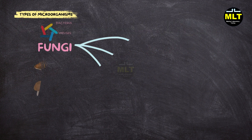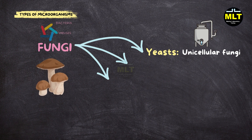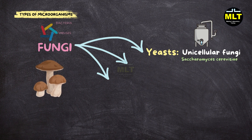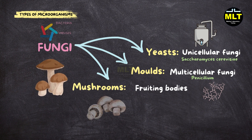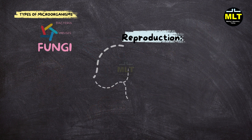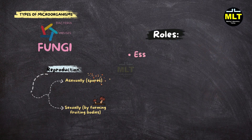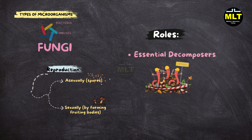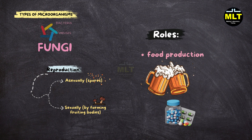Fungi types. Fungi can be classified into several groups: Yeasts — unicellular fungi used in baking and fermentation, example Saccharomyces cerevisiae; Molds — multicellular fungi that grow as filamentous structures, example Penicillium; Mushrooms — fruiting bodies of certain fungi that are often edible, example Agaricus bisporus. Fungi reproduce both asexually via spores and sexually by forming fruiting bodies. Fungi are essential decomposers, breaking down organic matter and recycling nutrients, and are also used in food production — cheese, beer — and pharmaceuticals such as antibiotics.